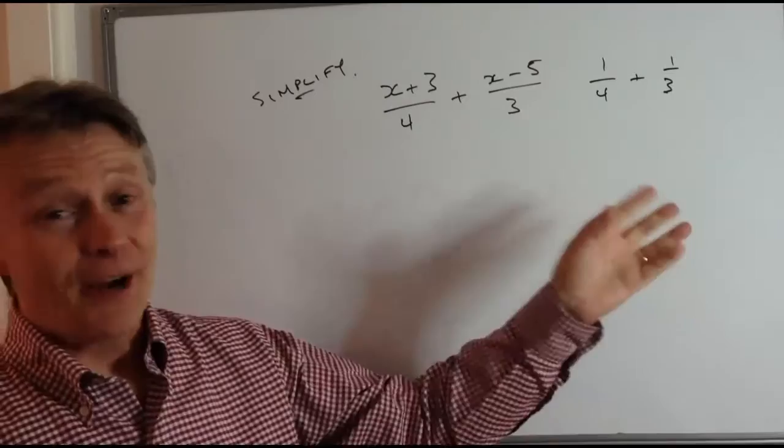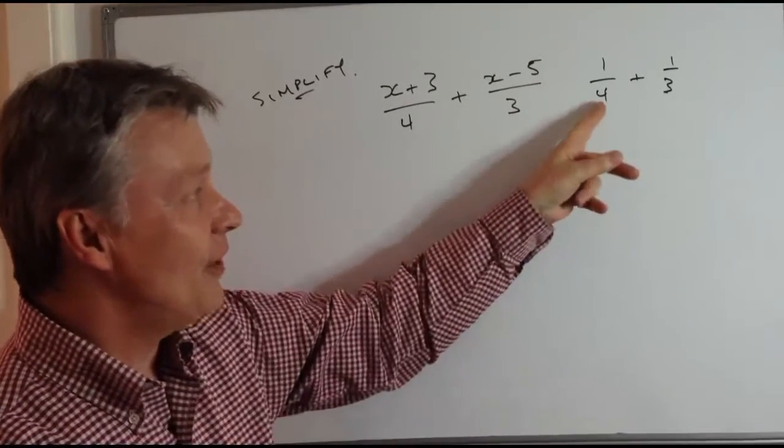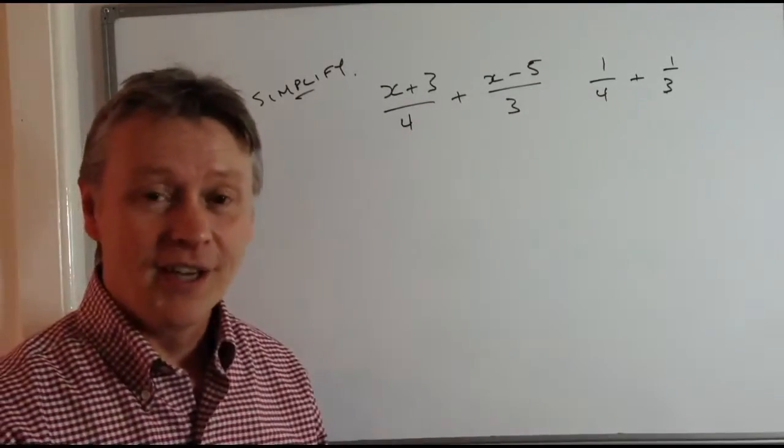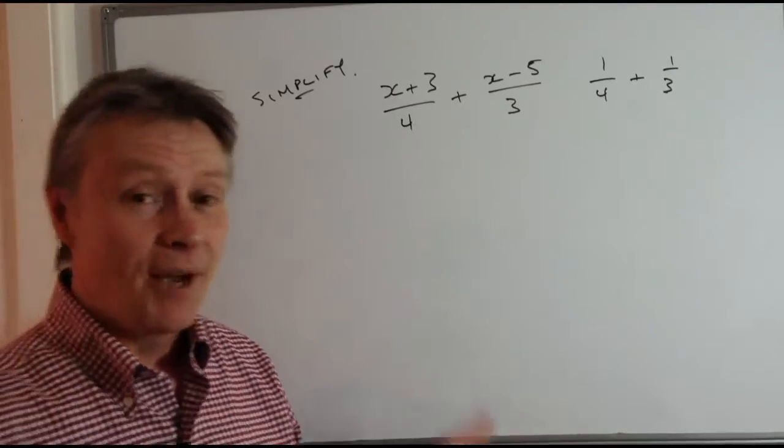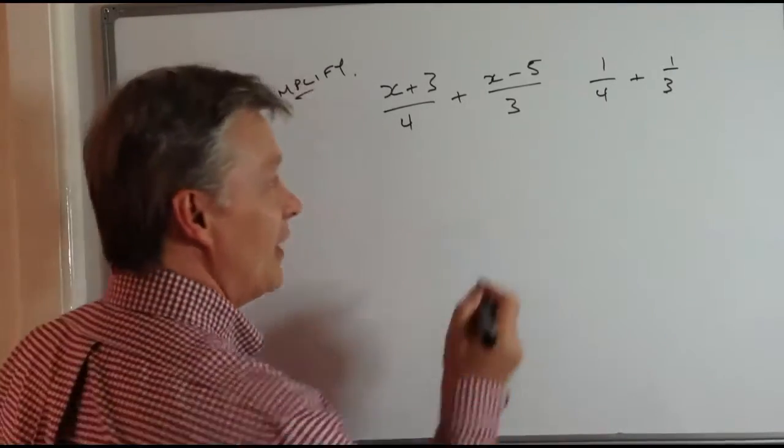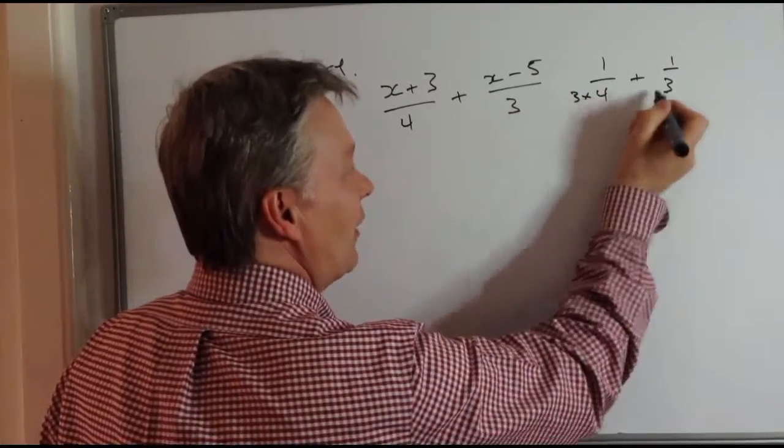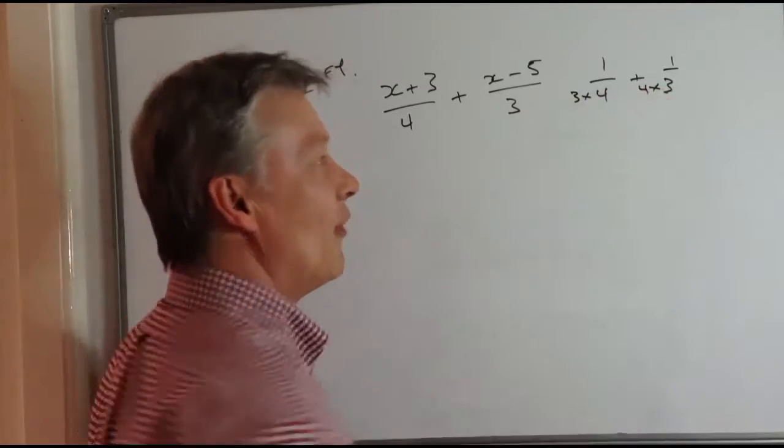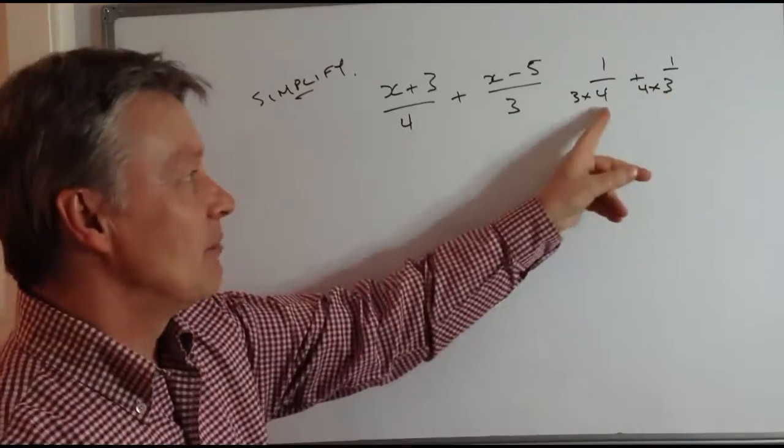What you've got there is something that we could write as 1/4 + 1/3. Well, hopefully you'll be able to do that now, because what you're going to do is convert these bottom numbers to the same number. Practically what we do is we multiply this by 3, and we multiply this by 4, and that becomes a bottom number of 12.